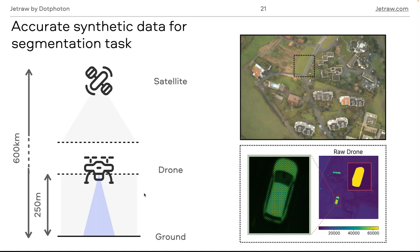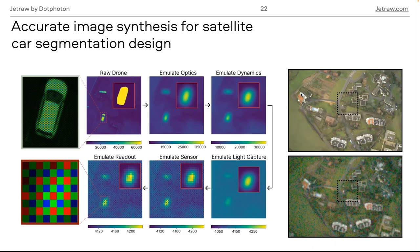Raw images taken with a drone made it fairly easy to train a machine learning network to identify cars. An end-to-end physical emulation was then written to simulate how the same images would look taken from a satellite with different properties — emulating the optics, dynamics (the satellite moves fast, causing motion blur), how light is captured, sensor geometry, and readout. From the very clear drone image in the top left, you get the blurry blob in the bottom left from the satellite emulation.